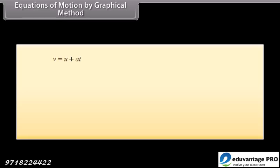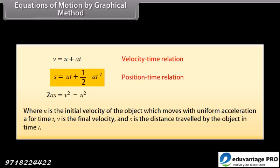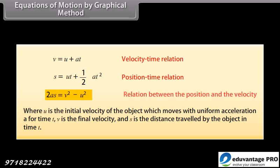Equations of motion by graphical method. The three equations of motion are: V = U + AT; S = UT + ½AT²; and 2AS = V² - U². Here, U is the initial velocity, A is uniform acceleration, T is time, V is the final velocity, and S is the distance travelled. The first equation describes the velocity-time relation, the second the position-time relation, and the third the relation between position and velocity.